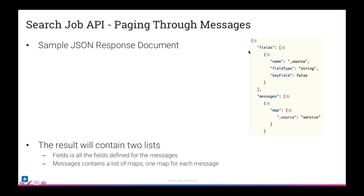The messages response has two fields. Fields describes the column headers of the data, in the order they would be displayed in the UI. Messages is a list of maps, with one map for every message — the raw message will show up in that section.